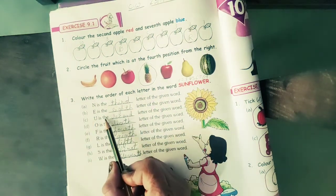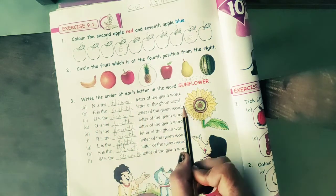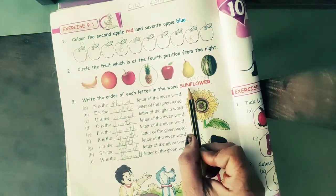Part C. U is letter of the given word. U is at which number position? Second.